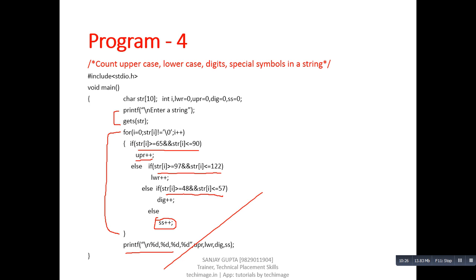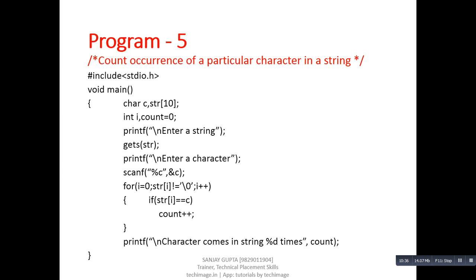The next program counts the occurrence of a particular character in a string. We read two values from the user: the string and the character we want to count. We use a for loop, and inside the loop there is a condition that checks if str[i] equals the character c — if both match, the count variable is incremented by one. After completion of the loop, the count variable is printed using printf.